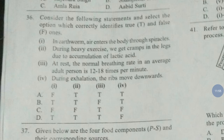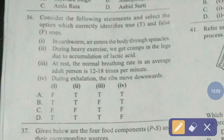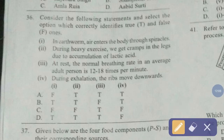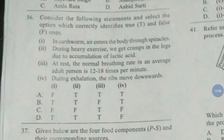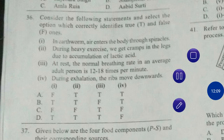Question number 36. Consider the following statements and select the option which correctly identifies true and false ones. The correct answer is option number A — first: false, second: true, third: true, fourth: true.